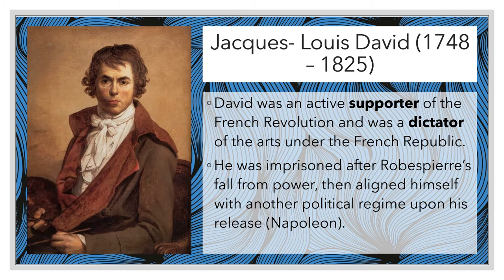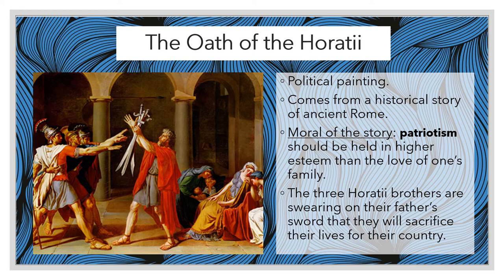We're moving on to our first artist, Jacques-Louis David. He was born in 1748 and passed in 1825. David was seen as a dictator of the arts and was a very big supporter of the French Revolution, mainly because he was also part of the middle class — the bourgeoisie — and he was the speaker for the artists during this time. When Robespierre, a leader of the revolution, fell from power and was imprisoned, Jacques decided he still wanted to fight for the cause and started painting for Napoleon Bonaparte.